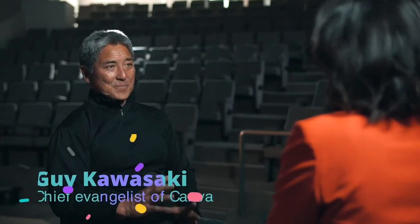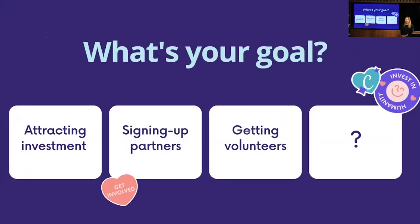Here's some advice from Guy: one of the things he always tries to do in a speech is to sell a dream — talking about how your product, service, book, or idea makes the world a better place. Macintosh empowered people to use computers; Canva has democratized design. It's the high road, the big picture benefit, and a crucial part of every speech. So think deeply about what dream you're trying to sell and what your goal is when you step up to present — whether it's attracting investment, signing up partners, getting volunteers, or recruiting staff.